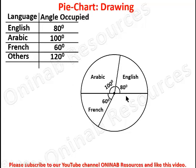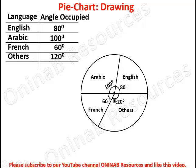The remaining sector has an angle of 120 degrees, which represents Others — the students speaking languages other than French, Arabic, and English. With this we have fully represented the information on a pie chart, and that is the end of this tutorial.